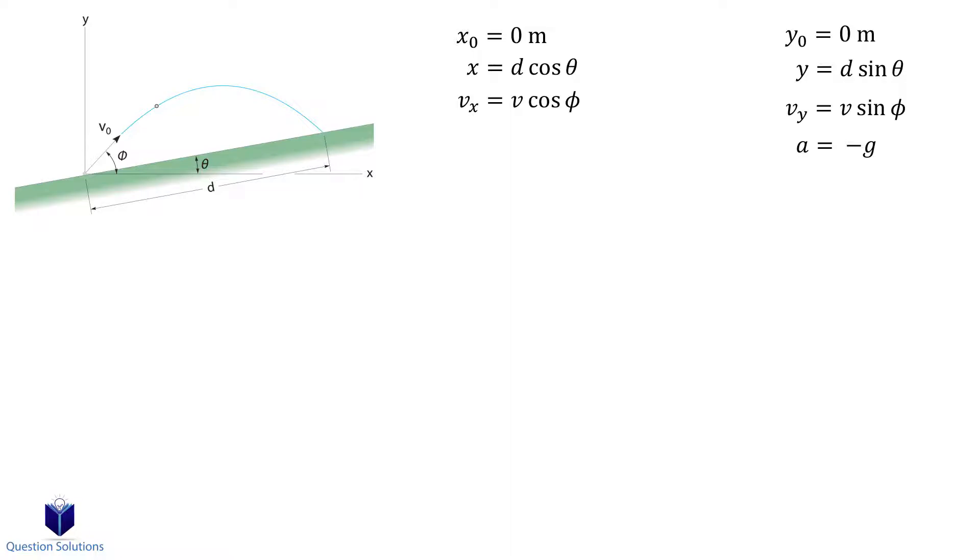Now we can write our equations. The first one we use will be for horizontal motion. Let's substitute what we know. Lastly, we can isolate for t and then set it aside to write an equation for vertical motion.